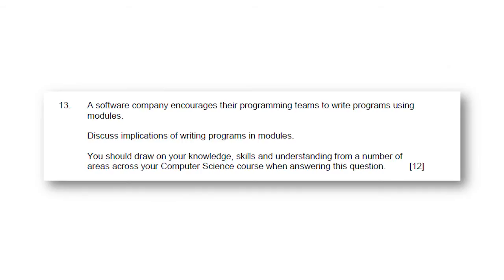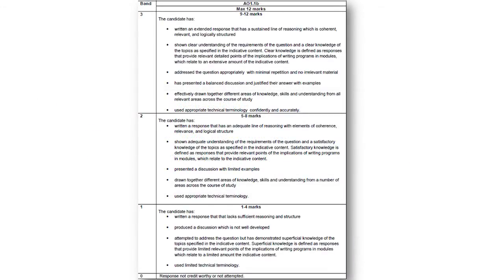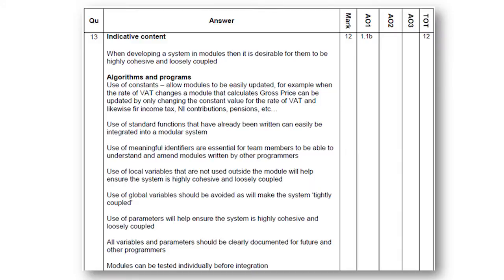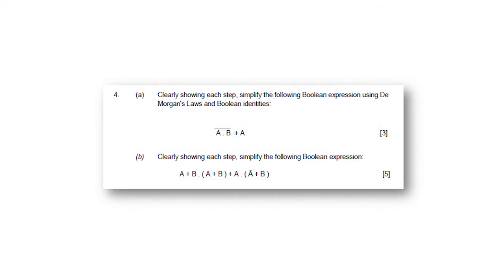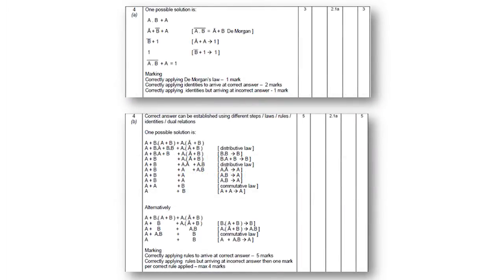Here is an example of a typical extended response question from Component 1, where one assessment objective is assessed. The assessment grid used for extended response questions of this type provides clear guidance on the qualities expected for answers at each of three mark bands. This is complemented by indicative content which is also provided to markers. The provision of both the grid and indicative content will provide a high degree of marking consistency. Within the component, mathematical questions related to computer science feature extensively. The mark scheme provides clear guidance on the methods that can be used to arrive at a conclusion, although there is flexibility to award marks should learners choose a different route to obtain the correct answer.